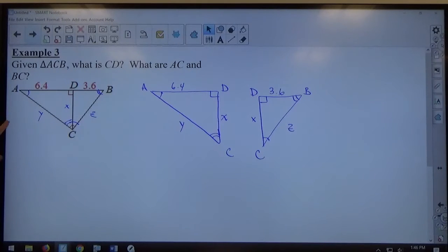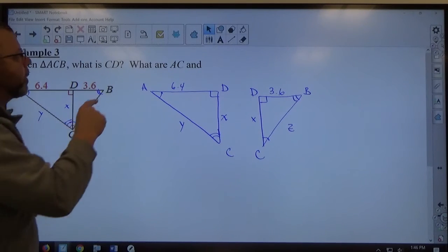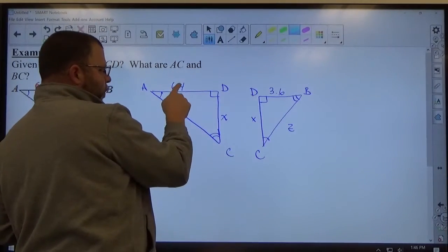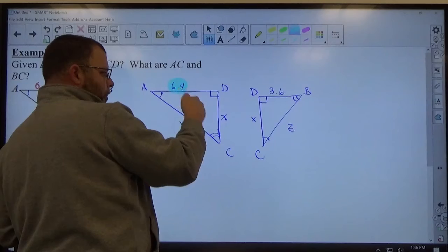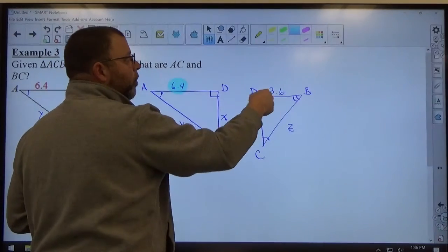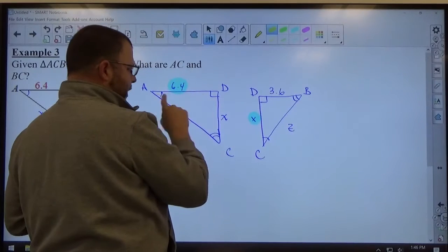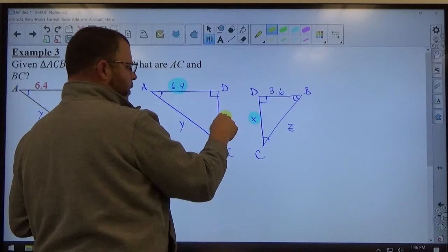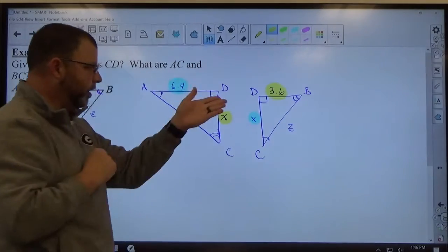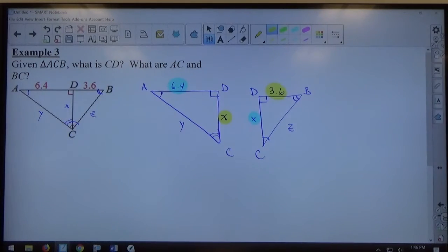I'm not even going to look at this right now, I'm just looking at those two to start off with. What I want you to recognize here is that 6.4 opposite the two marked angle should correspond to X opposite the two marked angle, and X opposite the one marked angle should be corresponding to 3.6, the one marked angle, because again, they're congruent by angle-angle similarity.